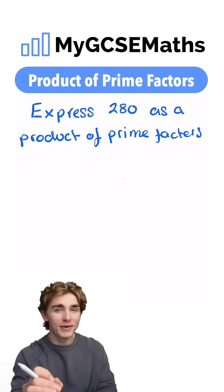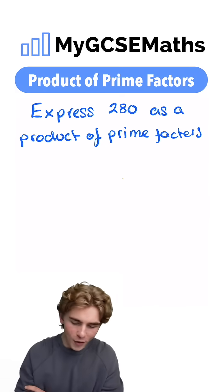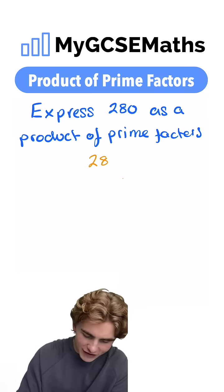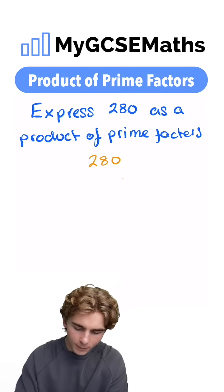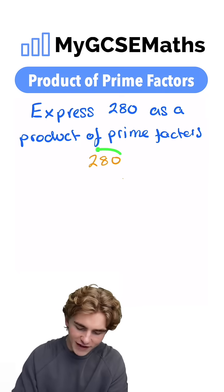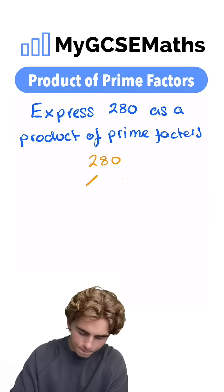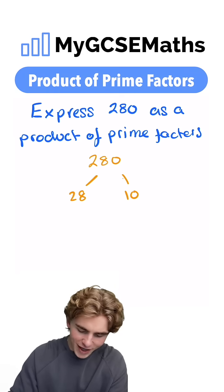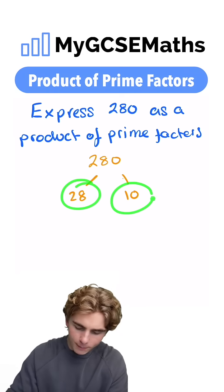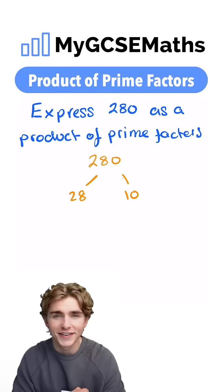This is going to be the one where we use the factor tree. So let's write out our number 280, and then we want to find two numbers which multiply together to give 280. We could say 28 and 10. We look at those two numbers and we can see that neither of them are prime numbers, so we're going to split them down into further factors.